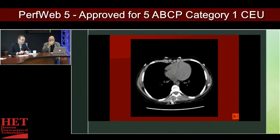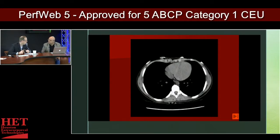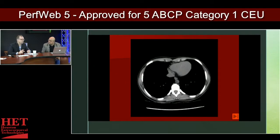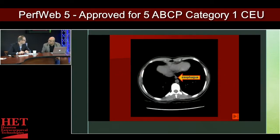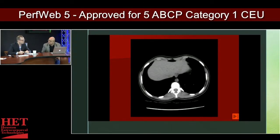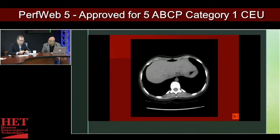If you're doing a contrasted study — say a cardiac gated CT scan or a CT angiogram of the aorta — you're going to want thinner cuts because you don't want to miss any pathology, because we're usually talking about dissections, aneurysms, and ruptures.